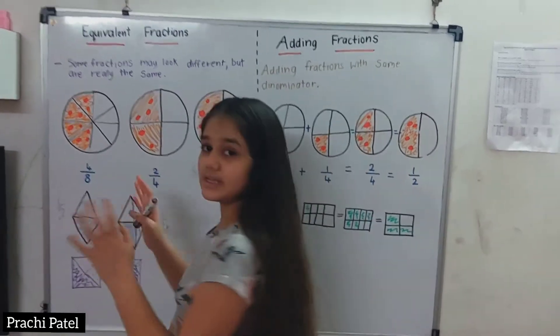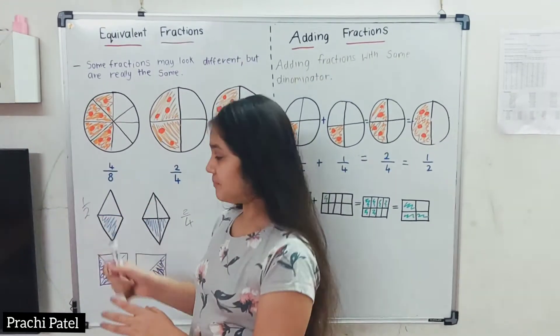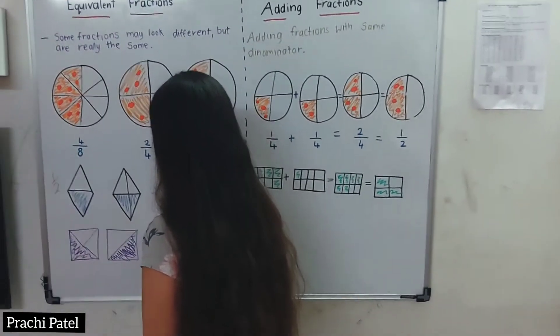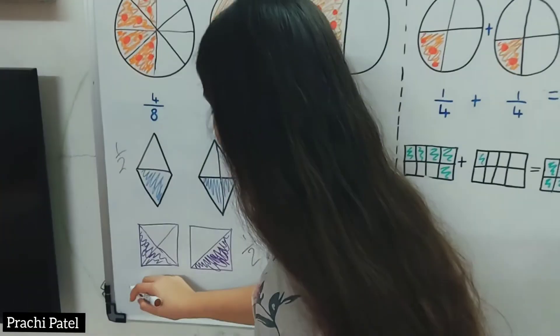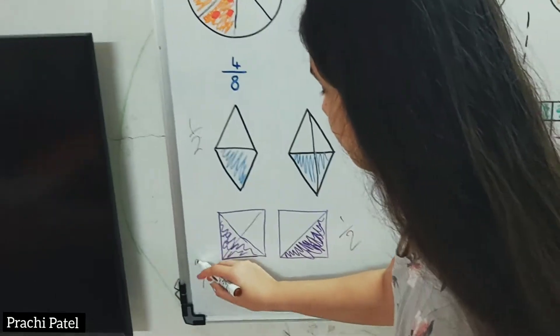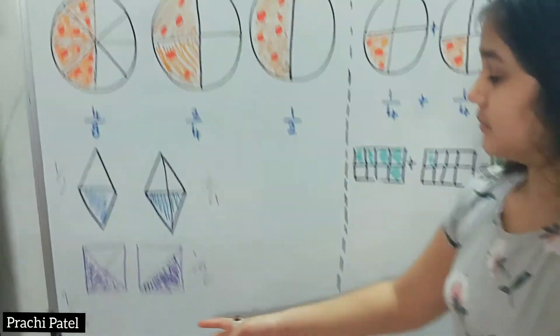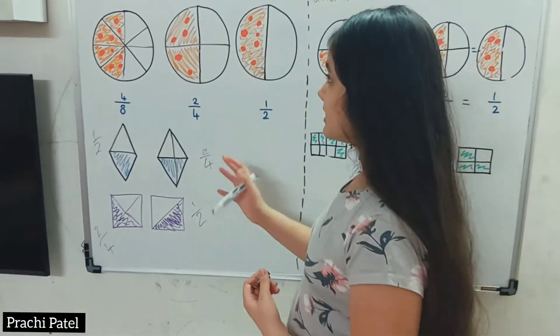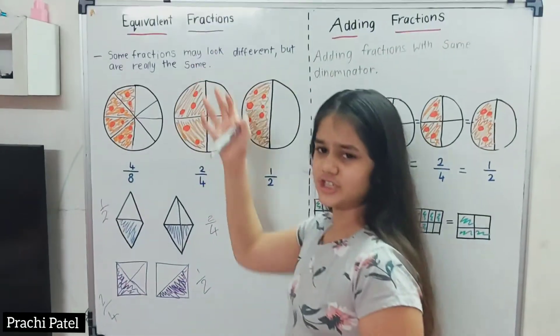The area occupied is the same. Over here we have 2 and 1. Here we have 4 and 2. This also occupies the same space. This is called equivalent fractions. Now let's go to adding fractions.